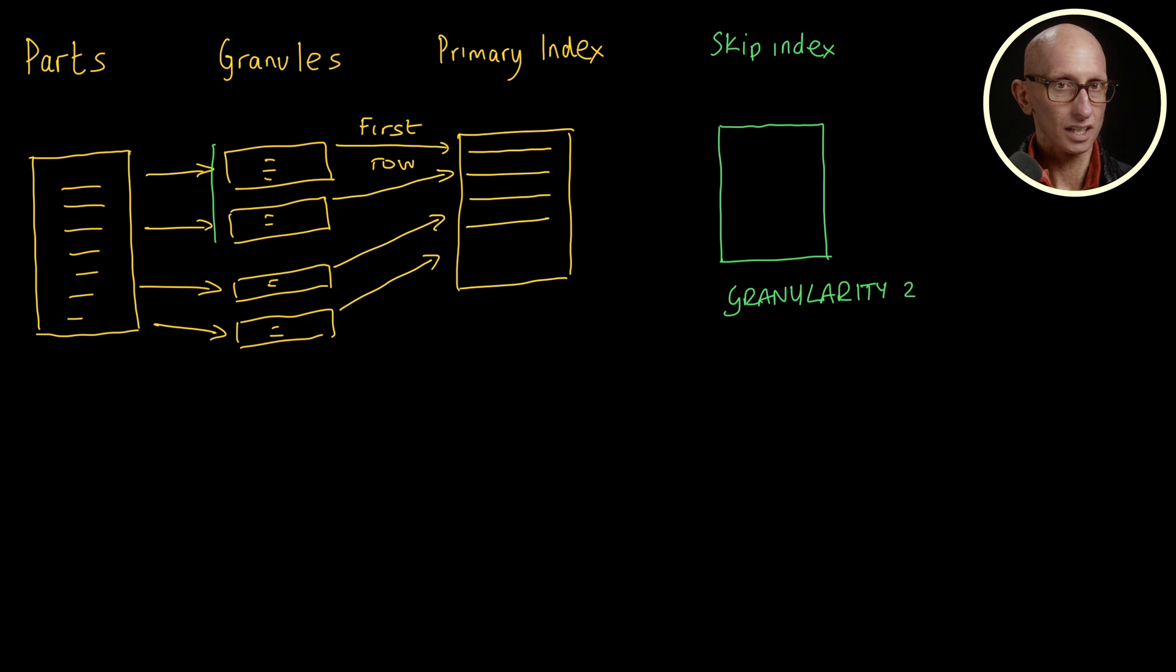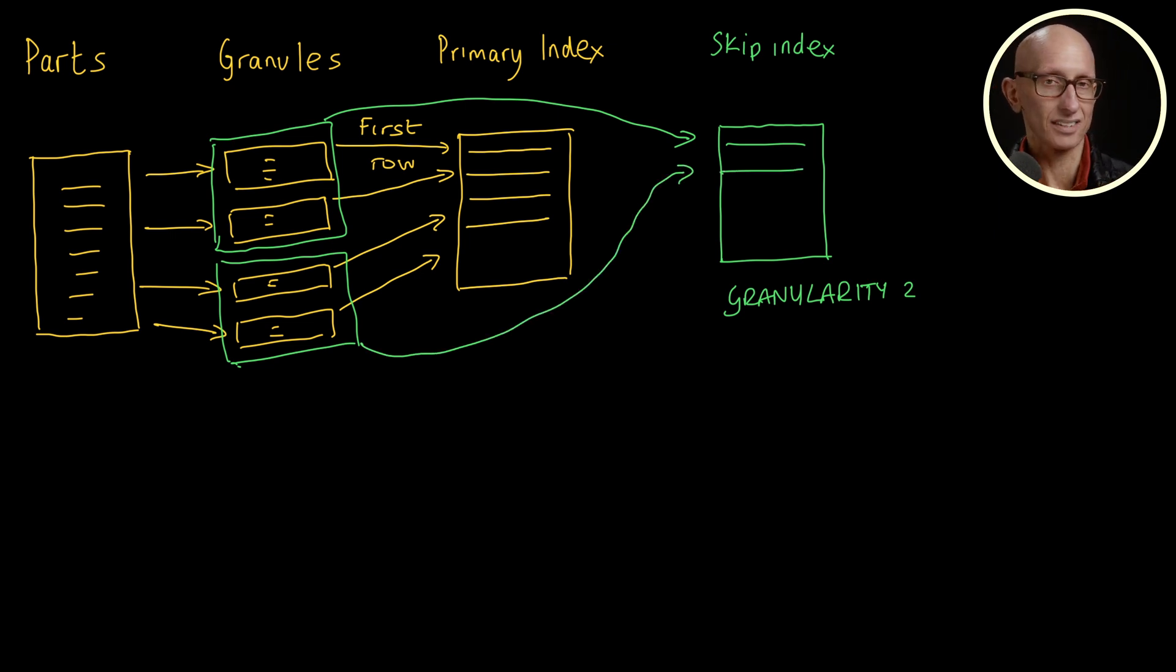So if we set it to one, there will be one entry in the index file per table granule. If we set it to two, there will be one entry per two table granules. The skip index file will contain some metadata depending on which type was chosen. The query engine refers to the skip indexes after the primary index to see whether it can skip some more granules.